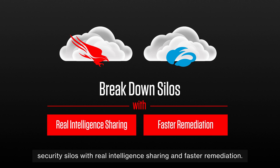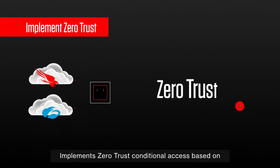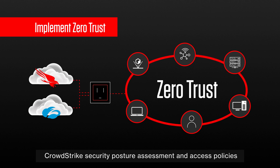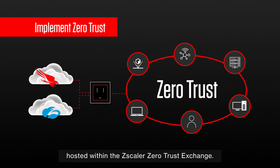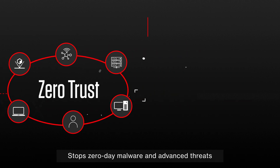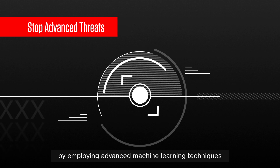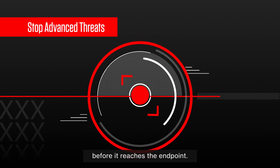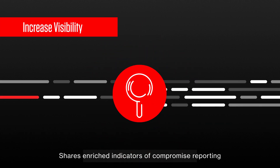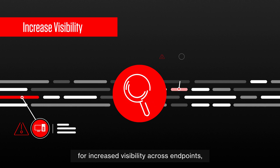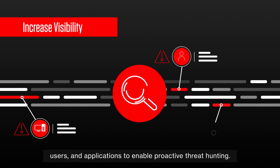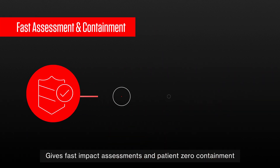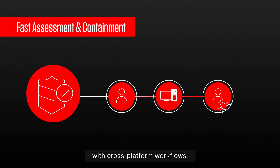CrowdStrike and Zscaler's industry-leading solutions break down security silos with real intelligence sharing and faster remediation. Our API-based integration implements zero-trust conditional access based on CrowdStrike security posture assessment and access policies hosted within the Zscaler zero-trust exchange, stops zero-day malware and advanced threats by employing advanced machine learning techniques before it reaches the endpoint, and shares enriched indicators of compromise reporting for increased visibility across endpoints, users, and applications to enable proactive threat hunting.